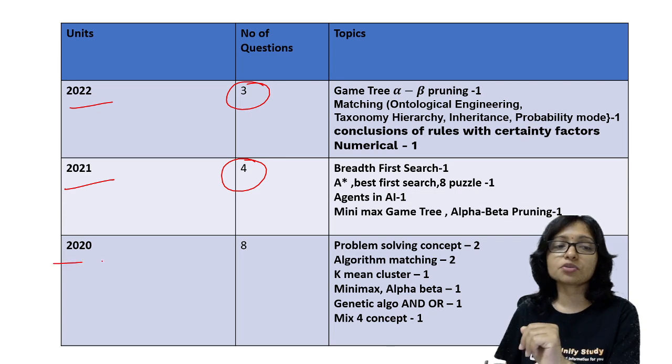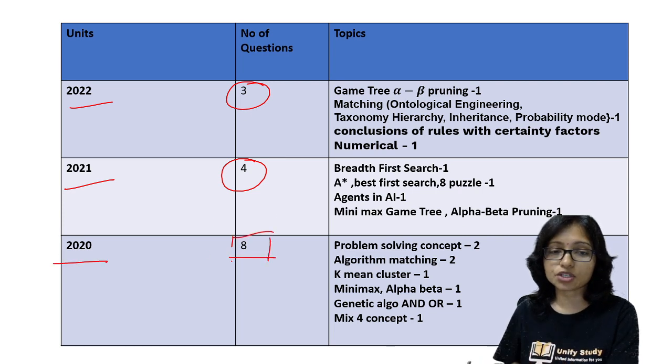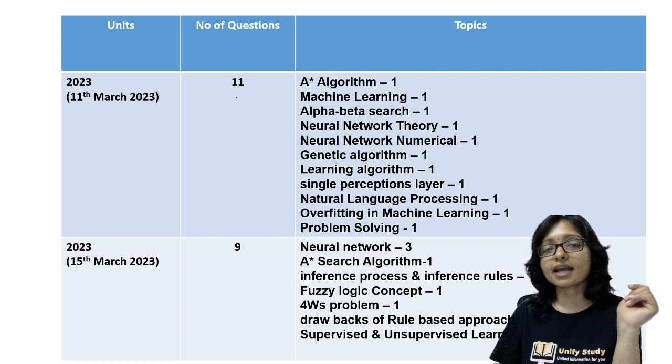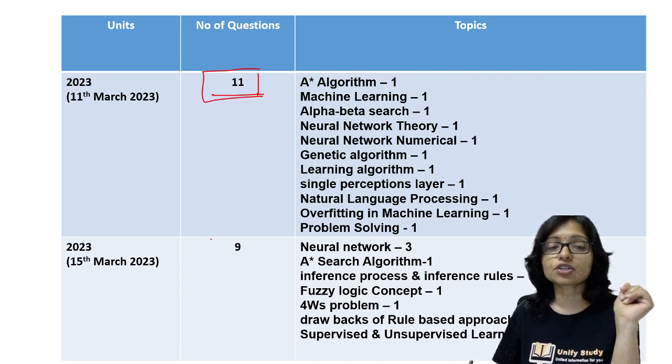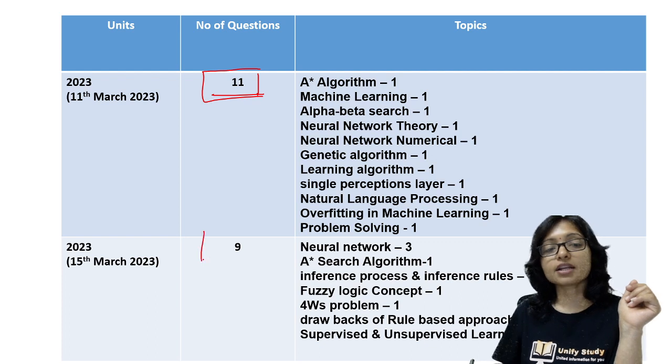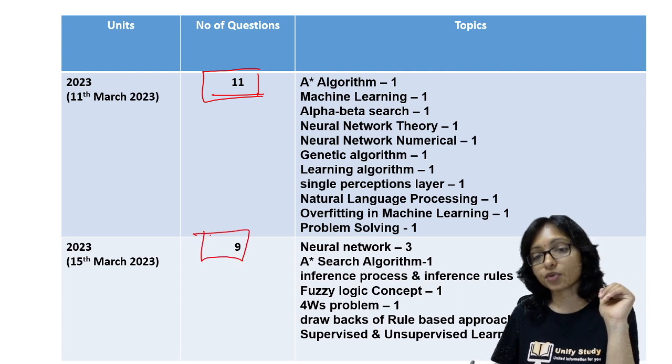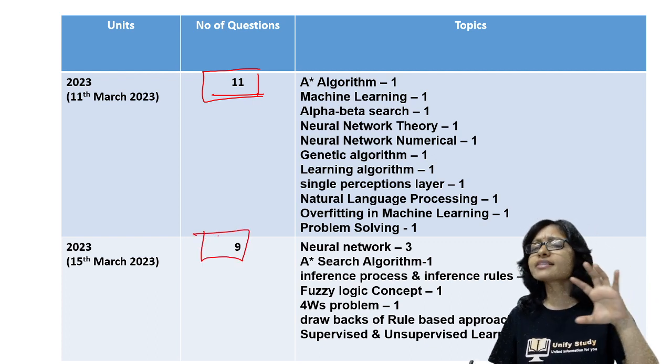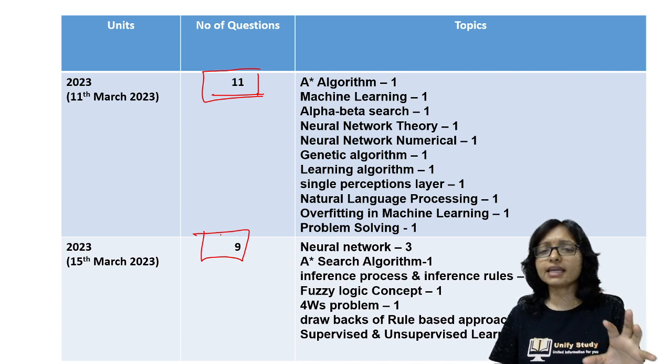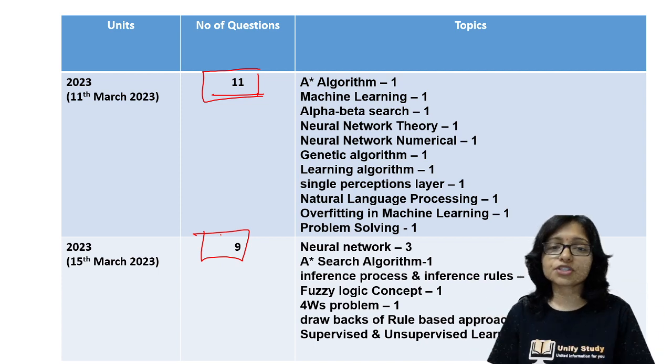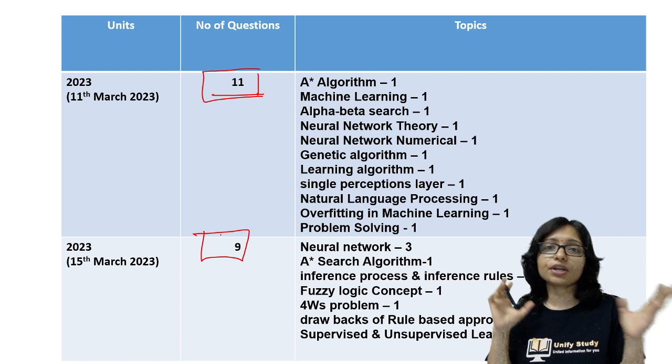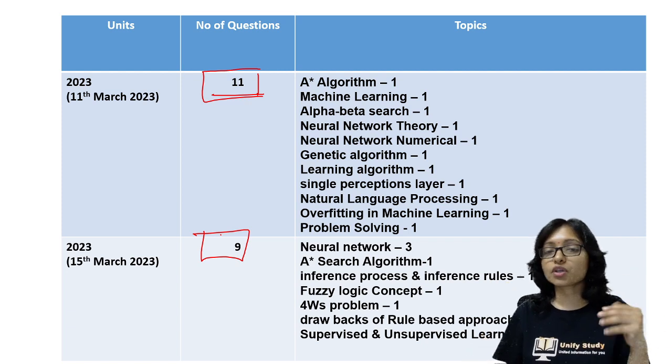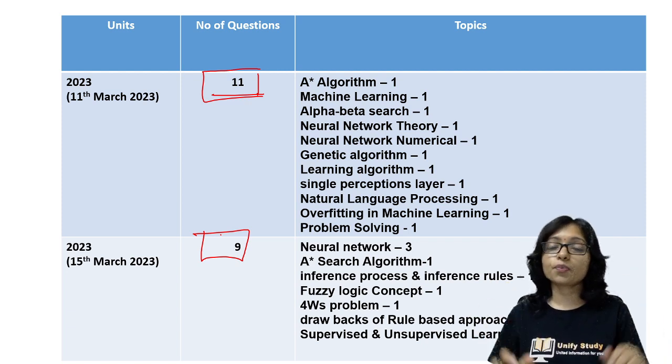That much focus was not there. In 2020 they asked 8 questions, but in this year they asked 11 questions. In 2023, 11th March they asked 11 questions and 15th March they asked 9 questions. Now let's try to understand what are the areas and how to prepare artificial intelligence, because this is a little bit different subject and mostly students are getting confused how to prepare it.